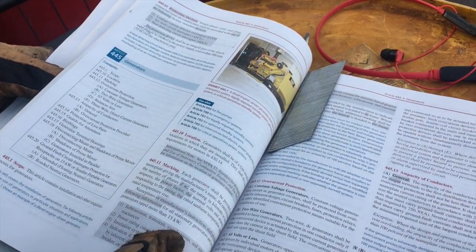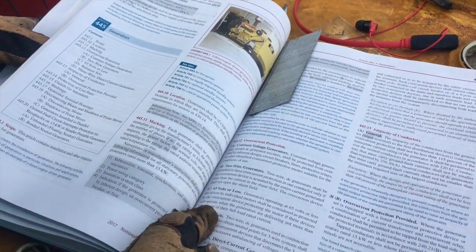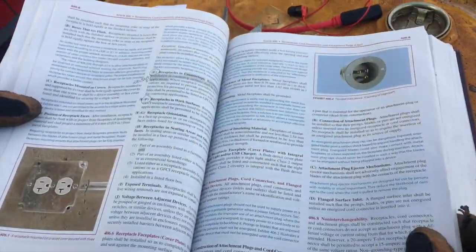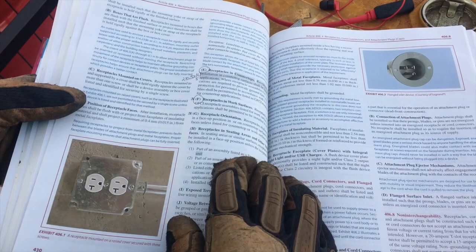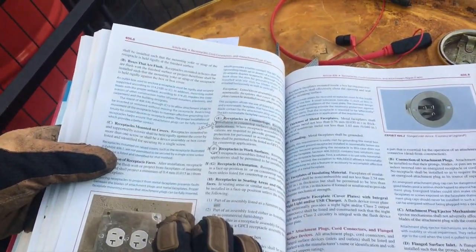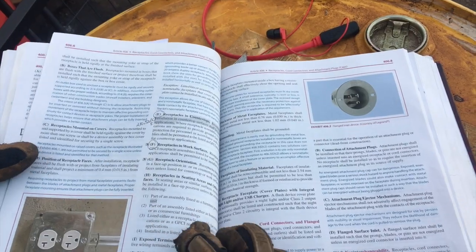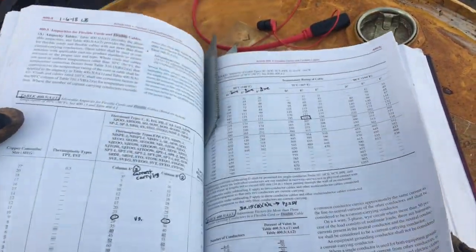Overcurrent protection, what you're doing. Then you also want to look at in your code, Article 406, just in your general receptacles for your tamper-proof rating, 20 amp rating, WR rating.